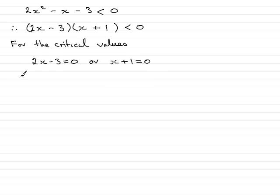And if we solve these two equations, we find that if we add 3 to both sides and then divide by 2, you end up with x equals 3 over 2, or 1 and a half. Or in this case, subtracting 1 from both sides gives us x is negative 1.